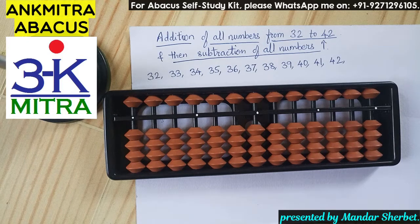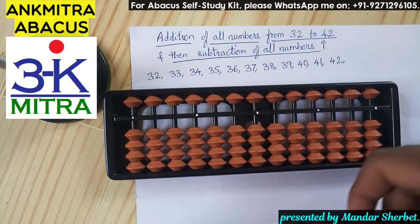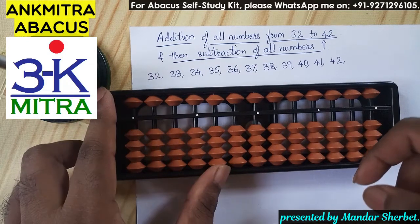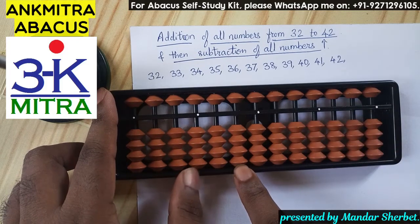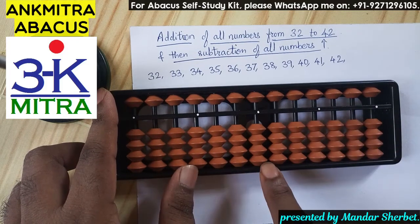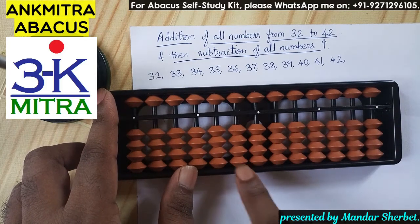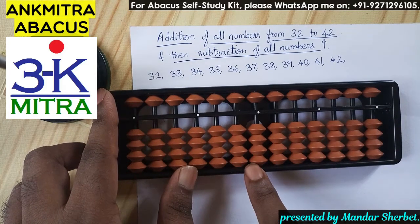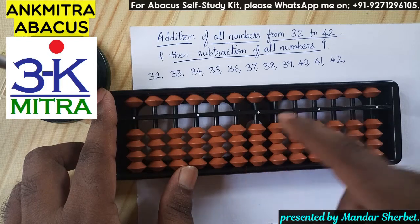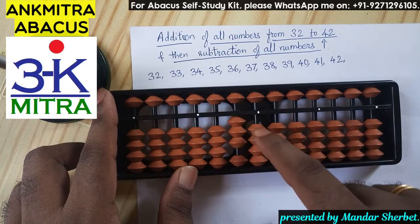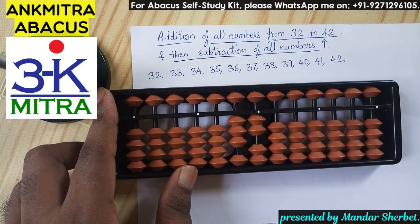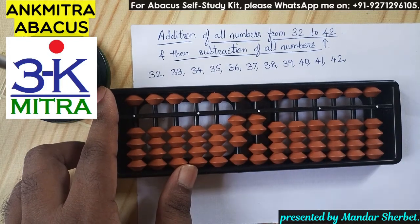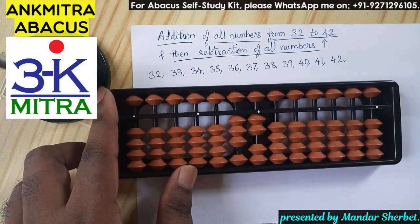Let's start the procedure with the first number, which is 32. This being the tens place and units place, I will be working on these two digits primarily. 32 is the first number taken.